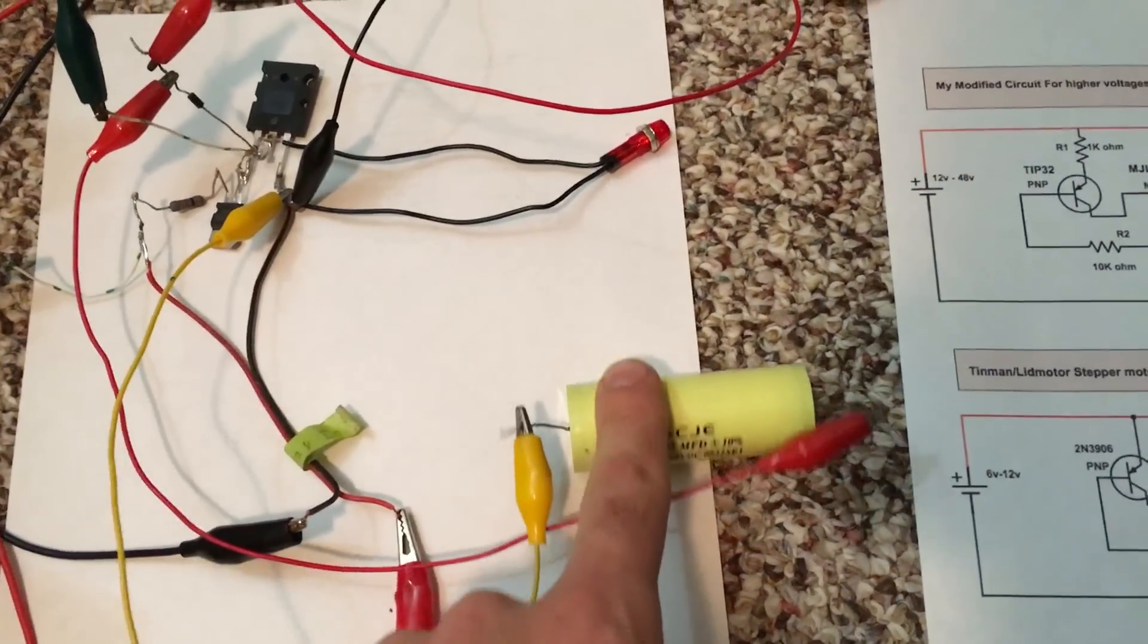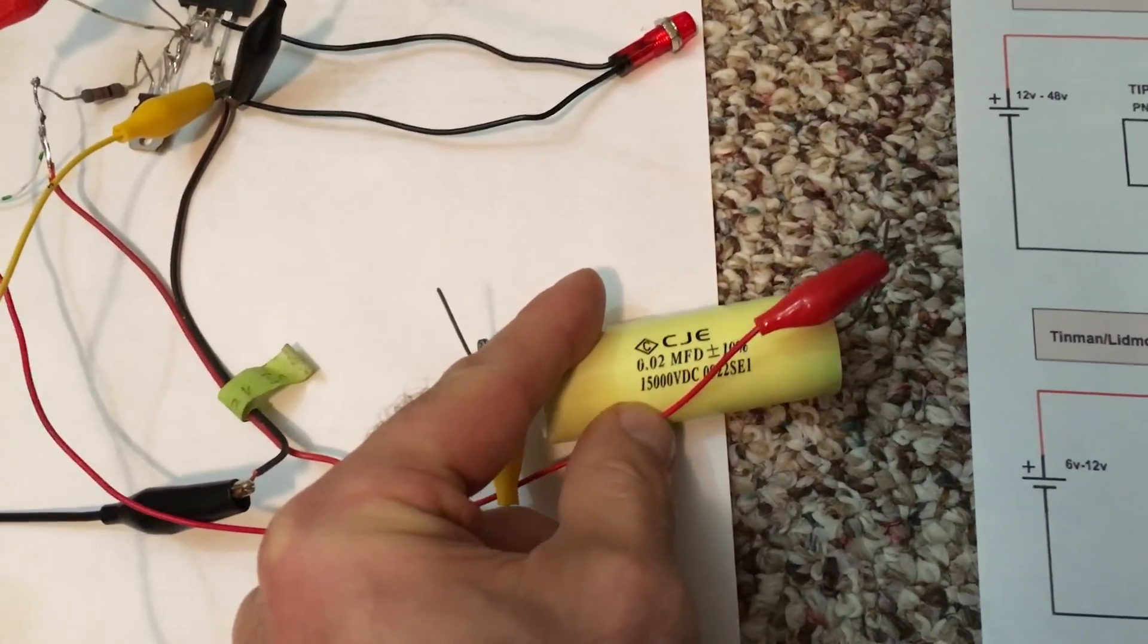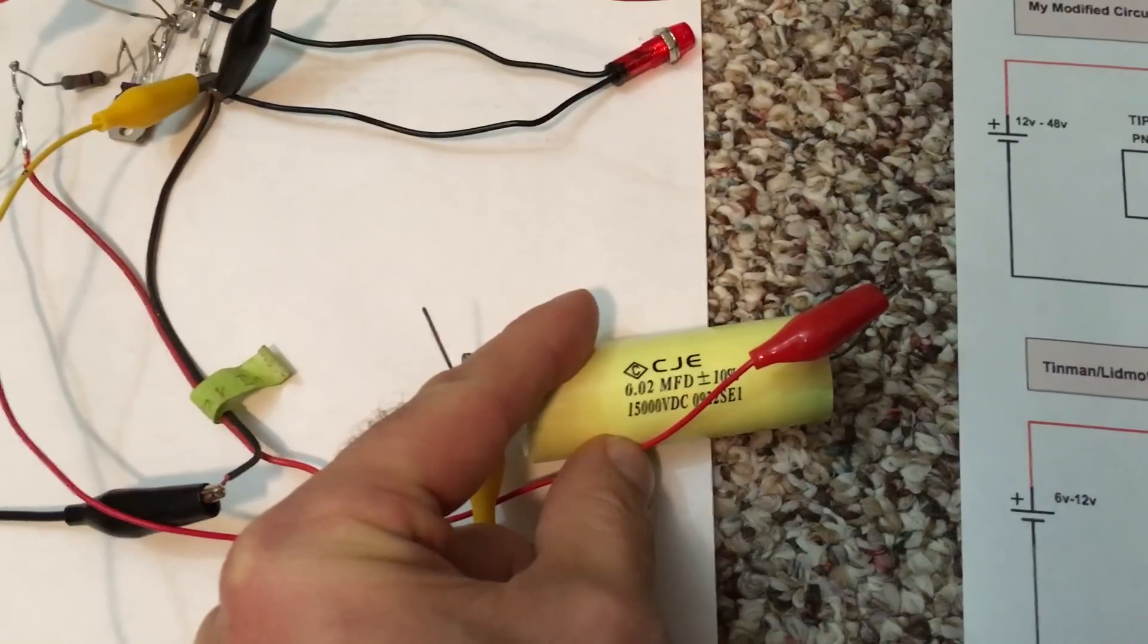There you go, 346 volts. Take it off, drops back down. Put it back on, 346. And all I did was hook up this little capacitor. Nothing special, any capacitor over 500 volts will work on here.